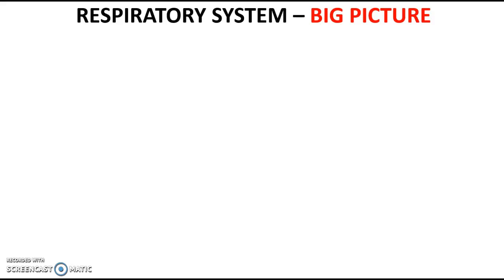At this point in A-level PE, we have an understanding that the reason why blood moves to the working muscles is because our muscles require oxygen within the blood to those working muscles. This unit — the respiratory system — gives us a real understanding of the process of getting oxygen in the air into our lungs, and then once we get it into our lungs, how do we get it into the blood? And then how do we get it to the muscles? So now we're looking at the processes behind air moving into our lungs and how we diffuse the gases to where we want them to go.